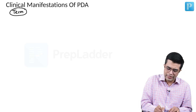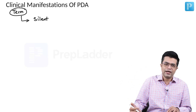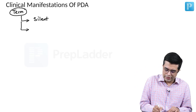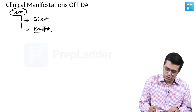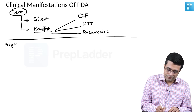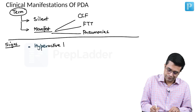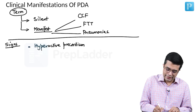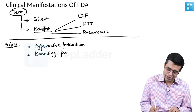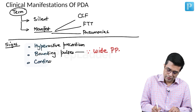Term babies or those coming to attention late will have either a silent PDA — which can remain undiagnosed for many months or beyond a year of life — or they may become clinically manifested with congestive cardiac failure, failure to thrive, and pneumonias. Signs of PDA include a hyperactive precordium, bounding pulses due to wide pulse pressure, and a continuous machinery murmur, which is the hallmark murmur seen in these individuals.